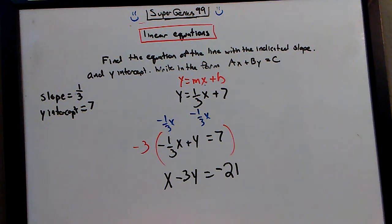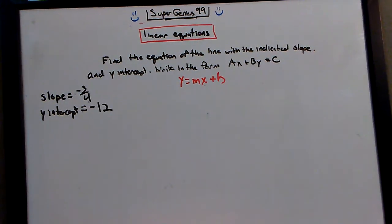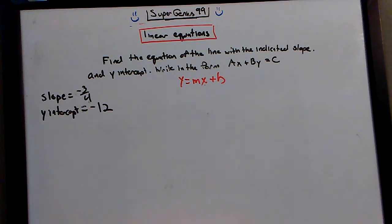And that will be it for that problem. Let's look at another one. Here we got slope of negative 3 fourths, y-intercept of negative 12.